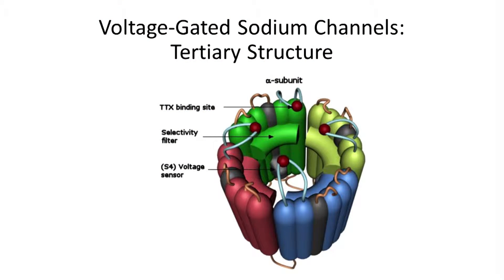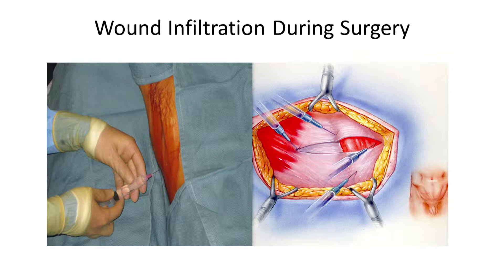The predominant intended site of action of local anesthetics is on voltage-gated sodium channels. We know a lot more about sodium channel subtypes in the last 20 years and know a lot more about targeting subtypes. Nevertheless, the drugs we have now are very nonspecific and fairly crude in their actions. We use local anesthetics for many uses every day — as the sole anesthetic for some procedures, and for infiltration in wounds both at the surface and in deep structures to reduce pain after surgery.